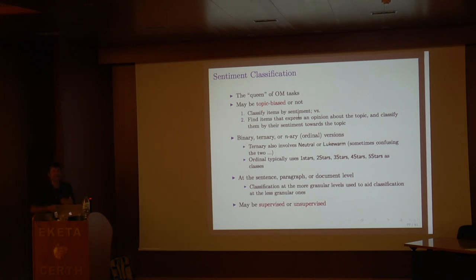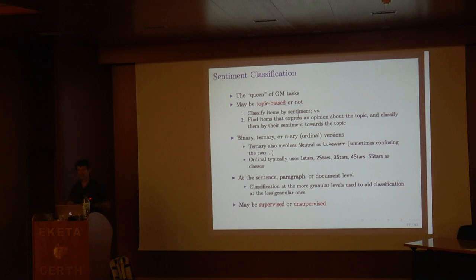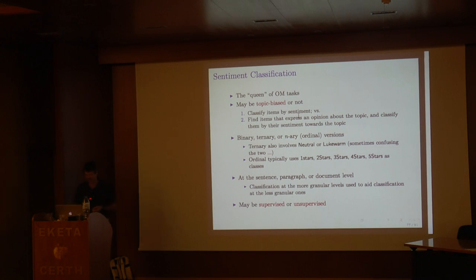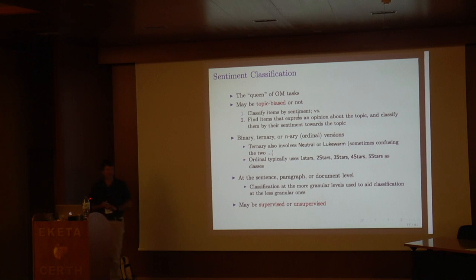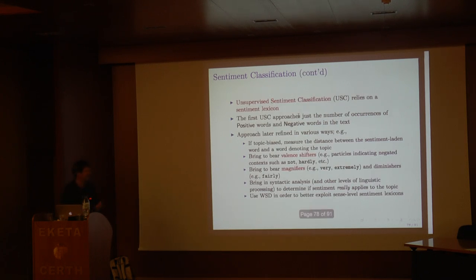Typically, people classify at the more granular level — say sentences — and use those results as evidence to determine the overall sentiment of the document. The main difference between approaches is whether classification is supervised or unsupervised. This might come as a surprise, since up to now we have mainly discussed supervised text classification. Unsupervised sentiment classification was in fact the very first type proposed.